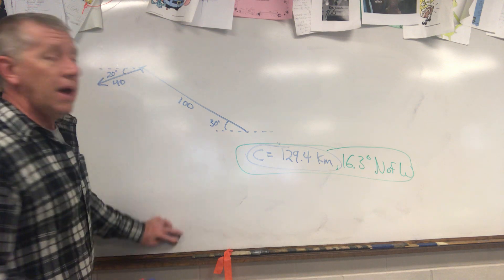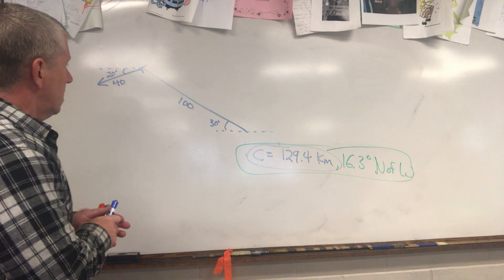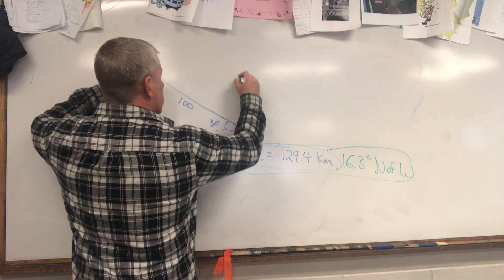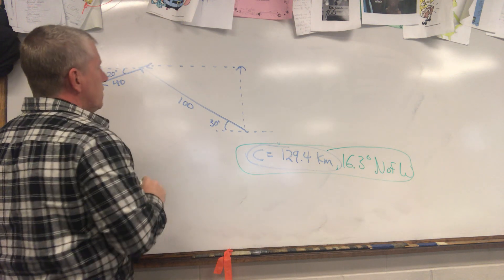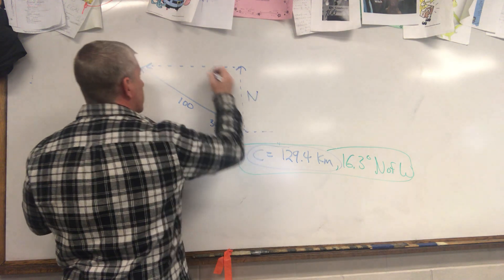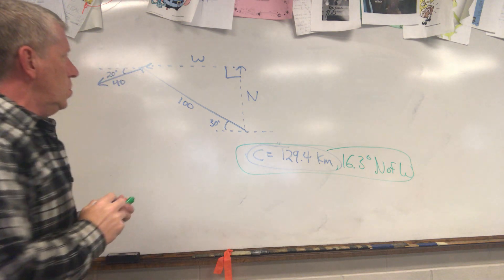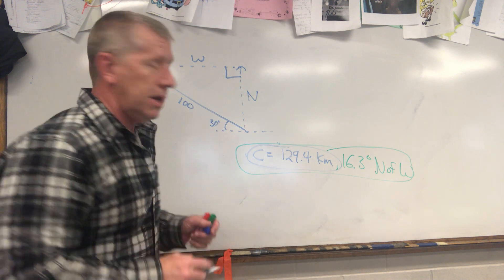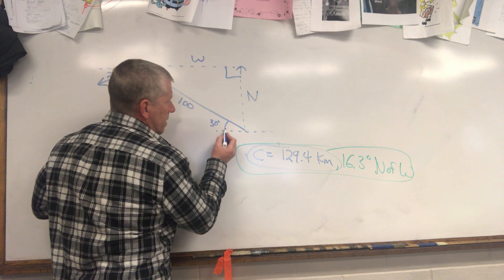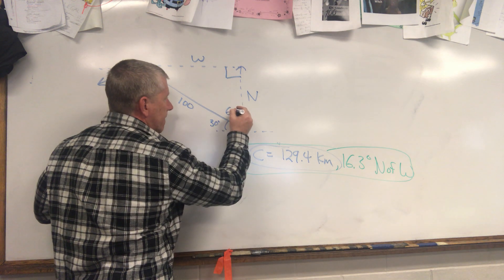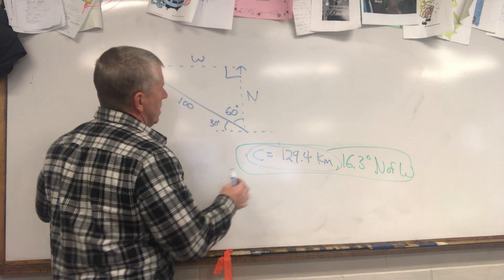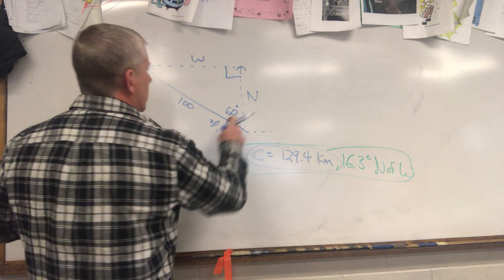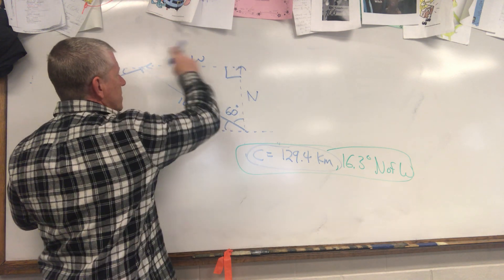We're going to do the same thing with our two vectors. Break each one down into right triangles. Starting from the origin, the first vector takes you north and west at the same time — that's a right triangle. Now solve for the two component sides using a little geometry. This angle is 30 degrees, which means the other angle in the right triangle is 60 degrees. With an angle and a side in a right triangle, you can solve for anything.